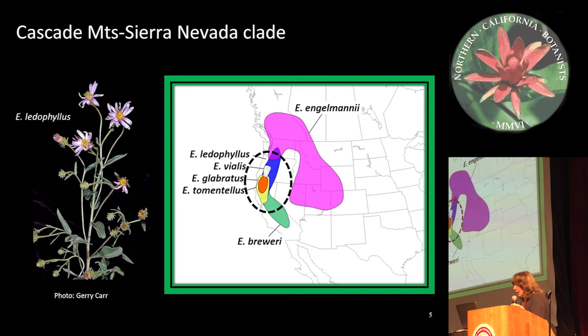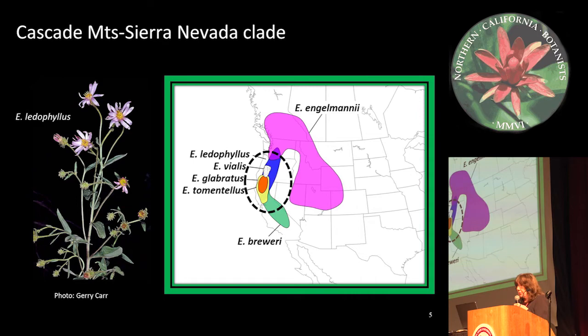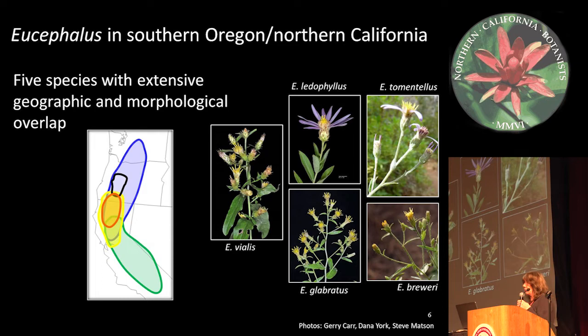In this group of six species, one is very widespread — mainly further north and further east than the others. The others are all pretty much distributed along the Cascades and Sierra Nevada with much geographical overlap. Southern Oregon and northern California is the trouble spot for this group, where four to five species are often co-occurring, if those really are species. So I'm going to focus just on five species of this geographic region.